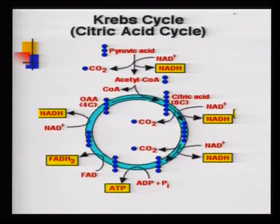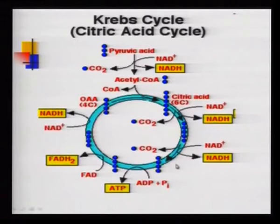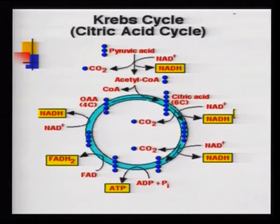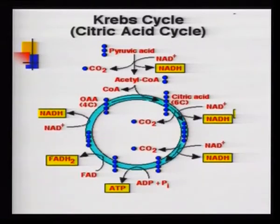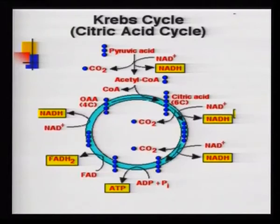Acetyl CoA is a 2-carbon compound. It is accepted by the 4-carbon molecule oxaloacetate, and this blue circle represents the Krebs cycle, named after Hans Krebs who first discovered it. We also call it the citric acid cycle because the first product formed after accepting acetyl CoA is citric acid. There are three things to observe: decarboxylation (removal of carbon), oxidation (removal of hydrogens producing reduced NAD or FAD), and ATP generation.